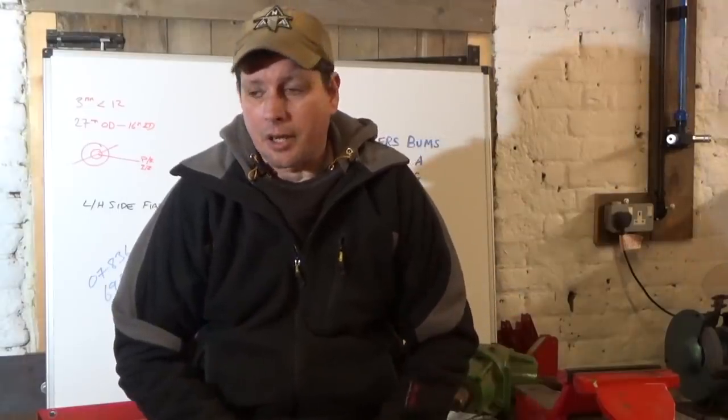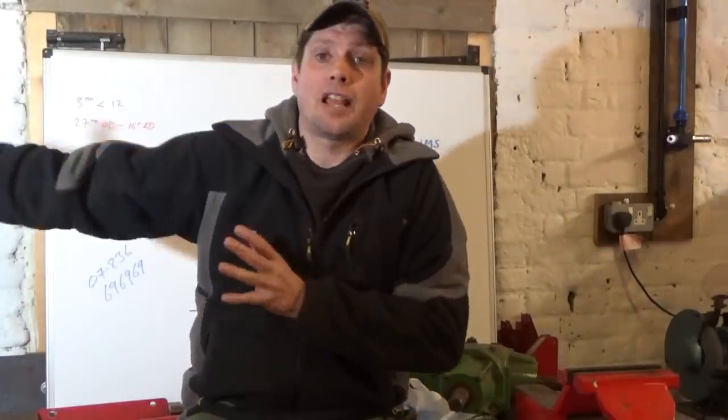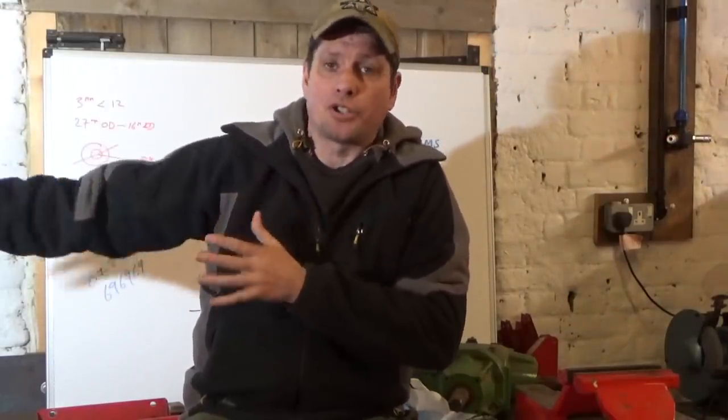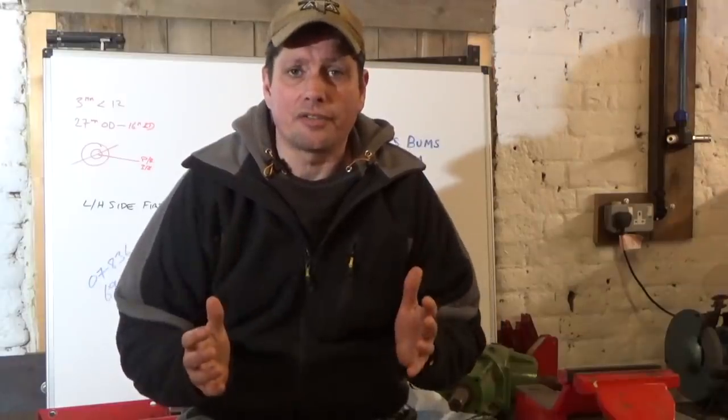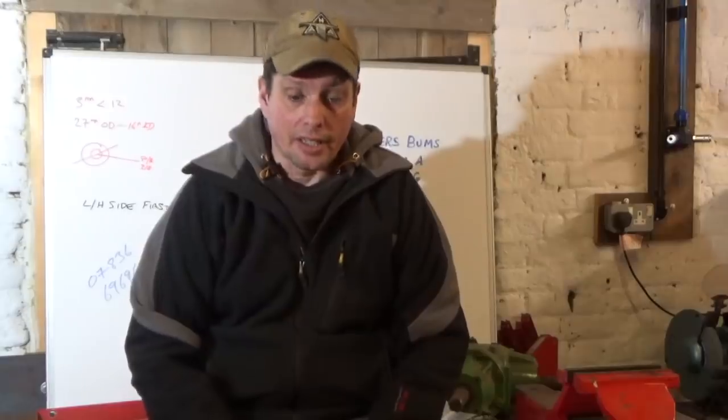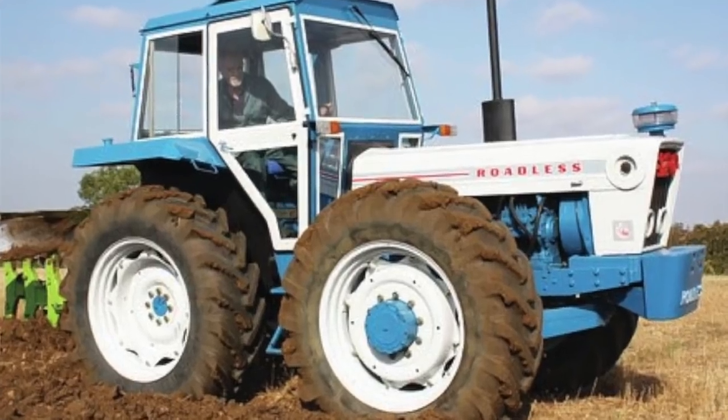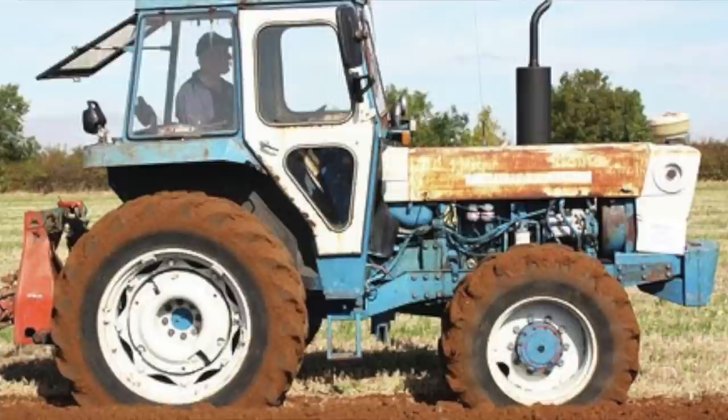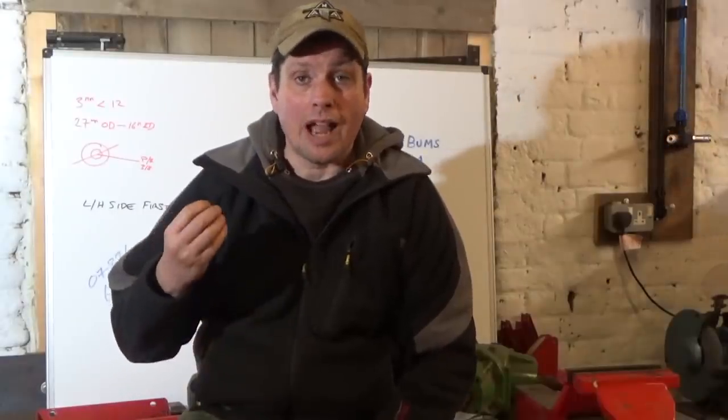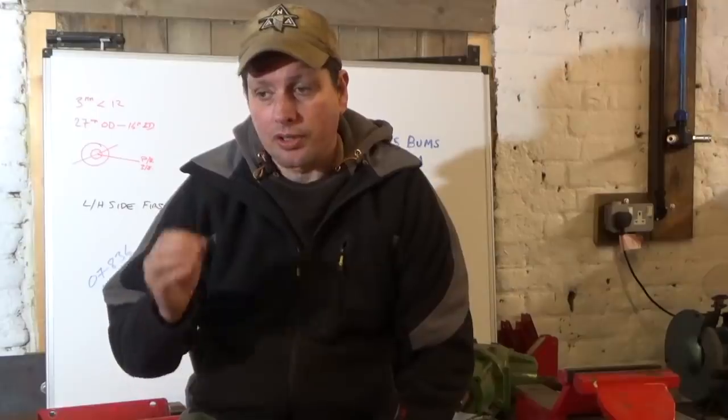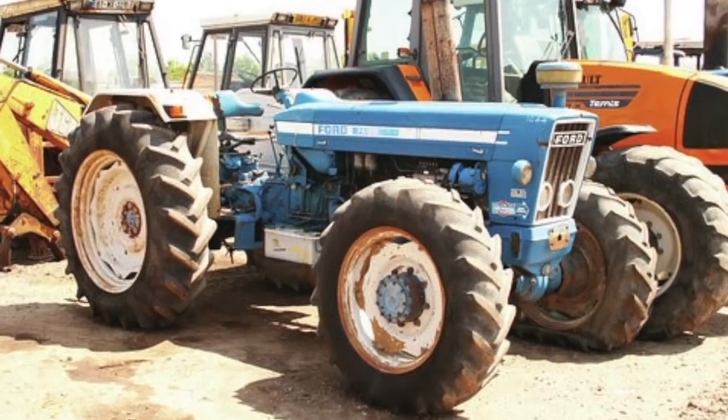The dealer would say there's the 8700, but that's too big a jump. We want something with a bit more grunt and low down torque, a six cylinder 115 horsepower. Ford didn't produce anything, but you could go to the likes of County, Muir Hill, and Roadless. Ford spoke to Eva in Belgium who are another conversion company. They'd been producing 7000s with six cylinder engines.